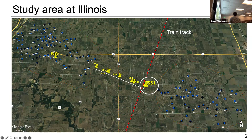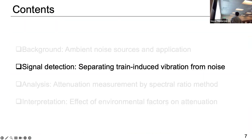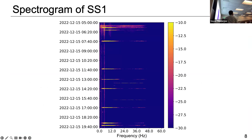First, because I'm using train-induced vibration, the thing I need to detect is basically the train arrivals. We are measuring a whole area of noises, so how can we detect the train arrivals and separate them from traffic and other noise? I'm going to use the spectrogram from sensor one, which is closest to the train track, to address this question of how we can detect the train-induced vibration.